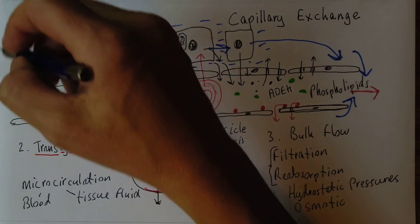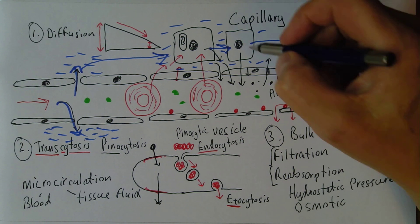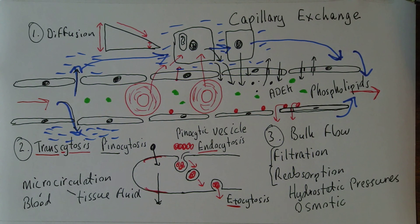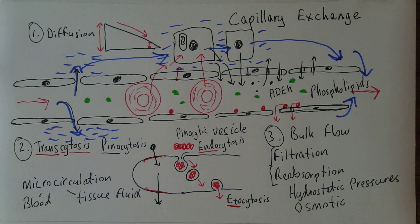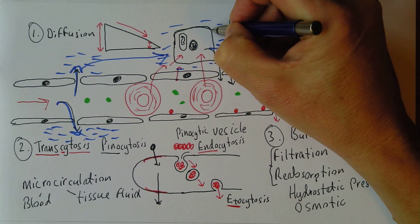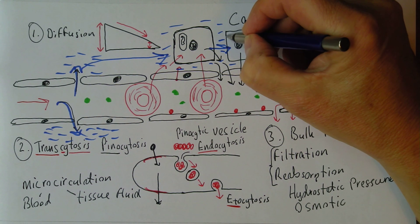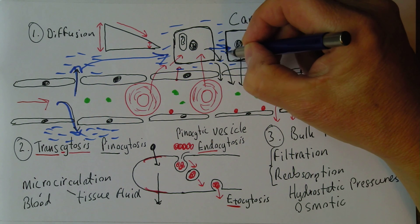It is these three processes — diffusion, transcytosis, and bulk flow — that maintain the viability of all body cells. They all depend on this vital physiology of the capillary, which is often overlooked in many texts and courses, but is absolutely vital to maintain the integrity of our tissues and organs and the whole functioning of the body. Because life actually operates at the cellular level — it's the viability of the individual living cells, these cells that possess the amazing phenomenon called life, all acting together to generate our lives.